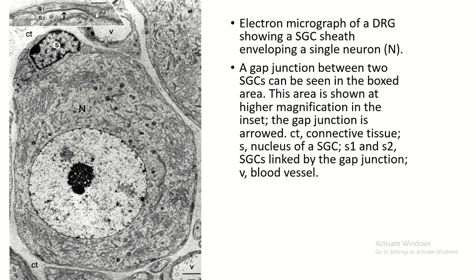This is the enlarged view of two satellite cells. This is the cell membrane of one satellite cell, this is the cell membrane of another satellite cell, and this is the gap junction in between the two satellite cells.